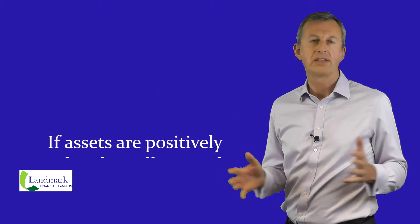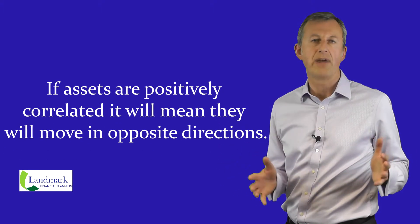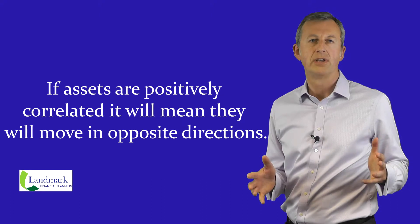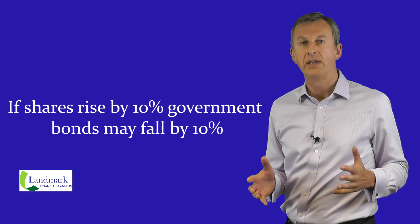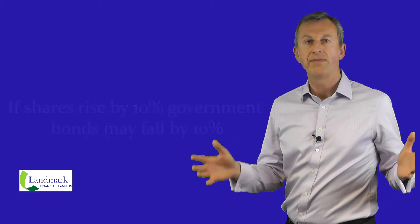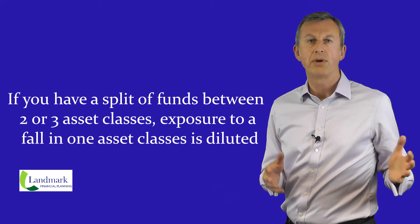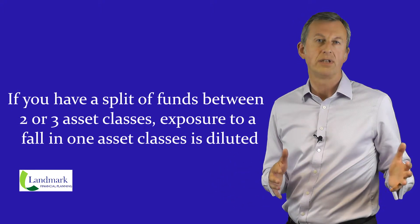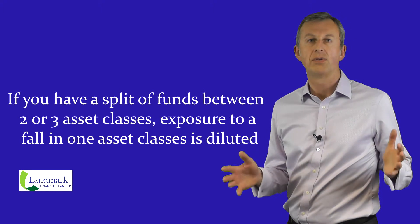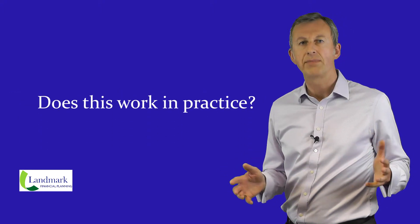If assets are positively correlated it will mean they will move in opposite directions. For example, if shares rise by 10% government bonds may fall by 10%, so if you have a split of funds between two or three asset classes your exposure to a fall in one asset class is diluted. Of course this also works the other way, but does this theory work in practice?